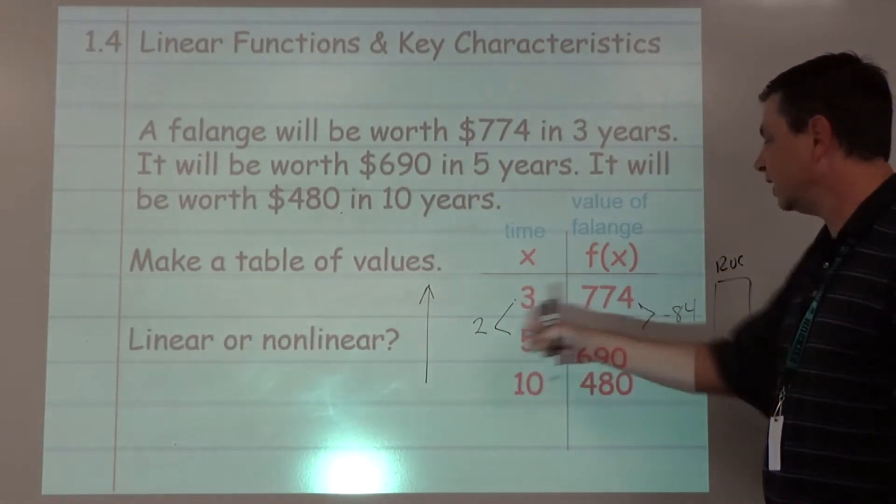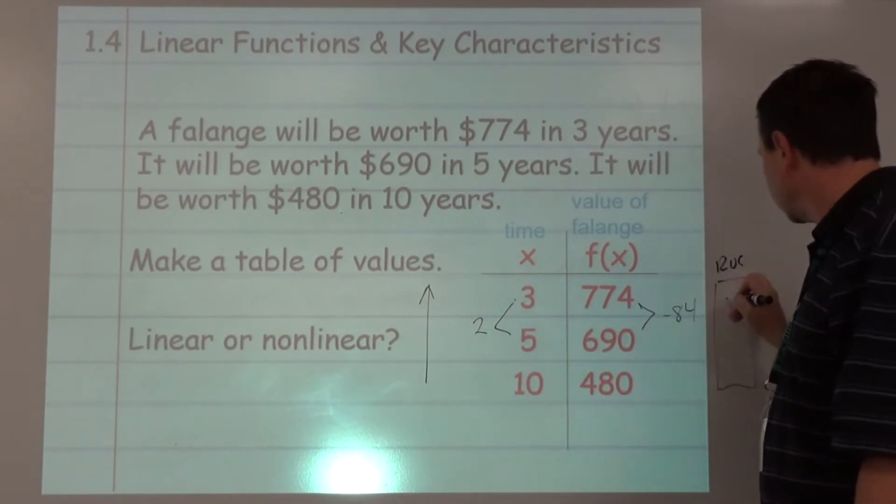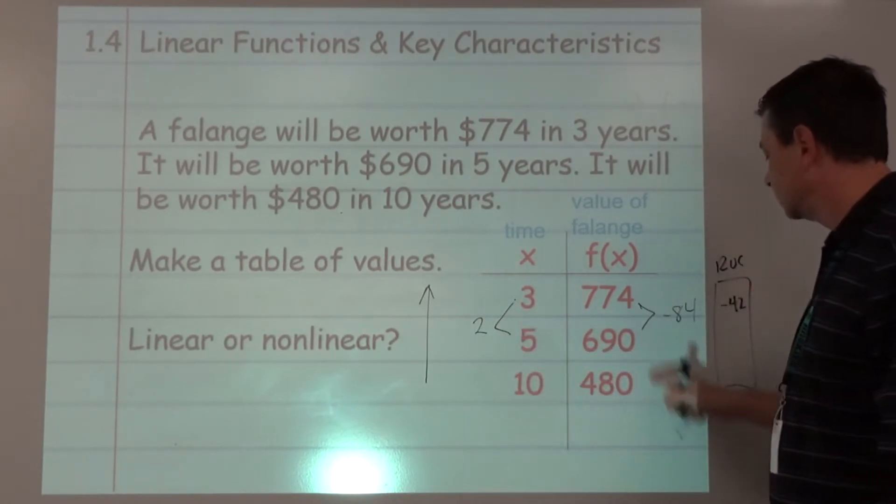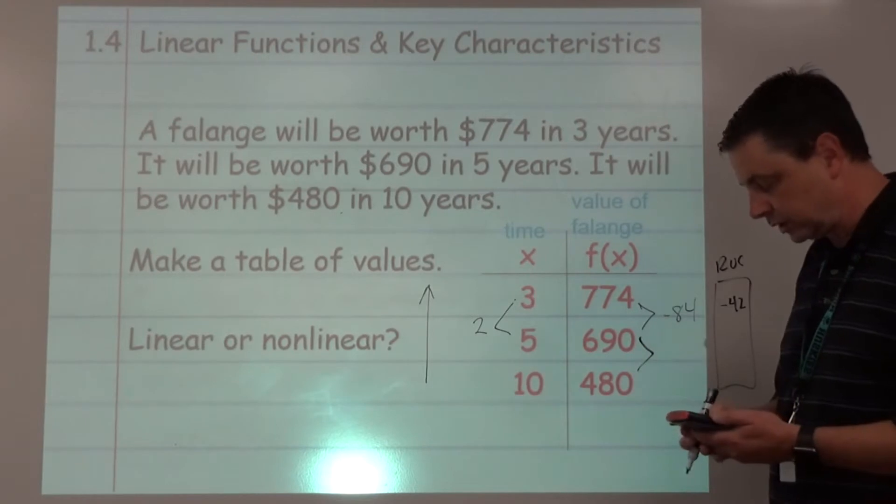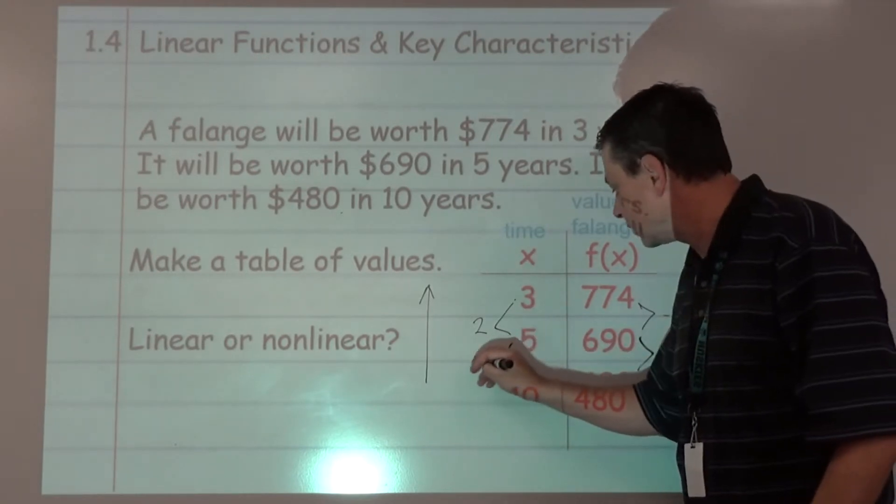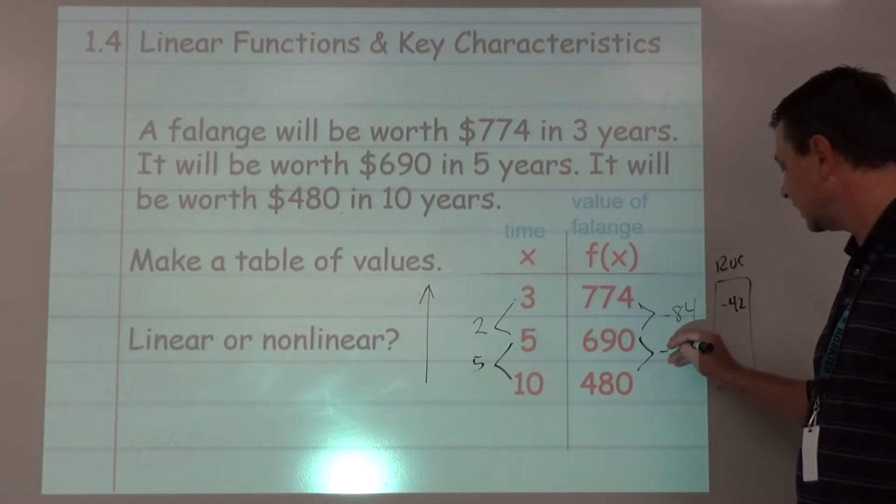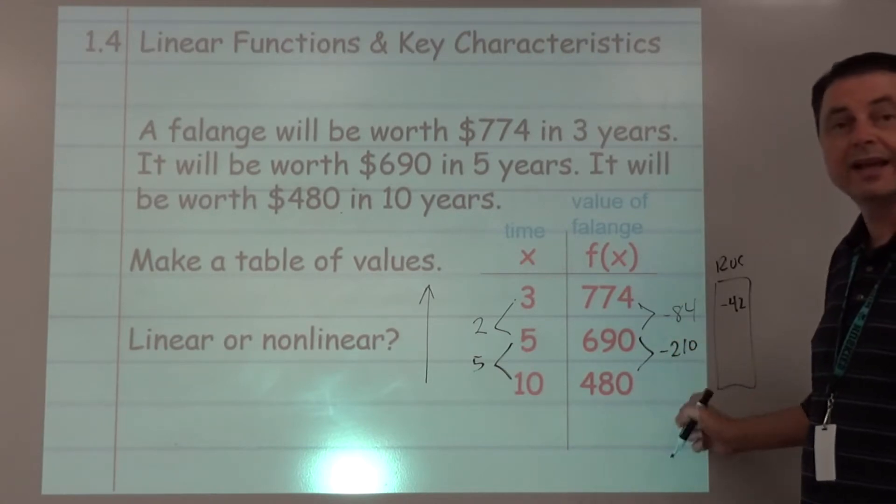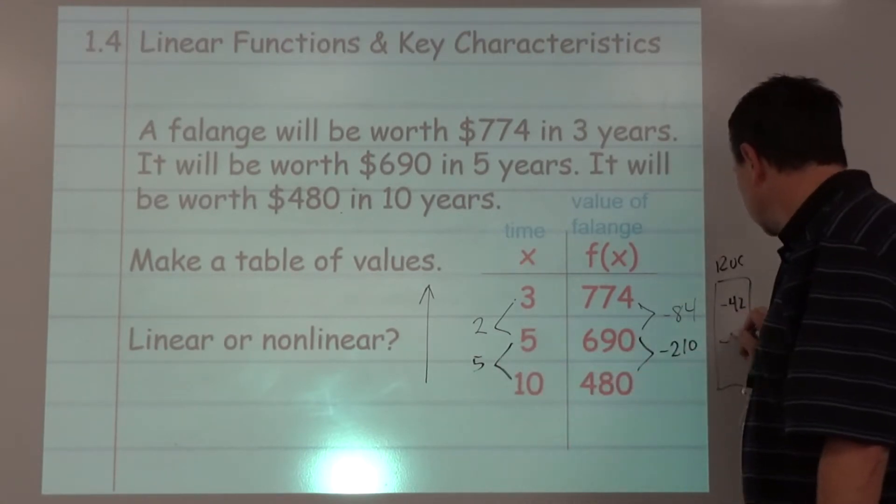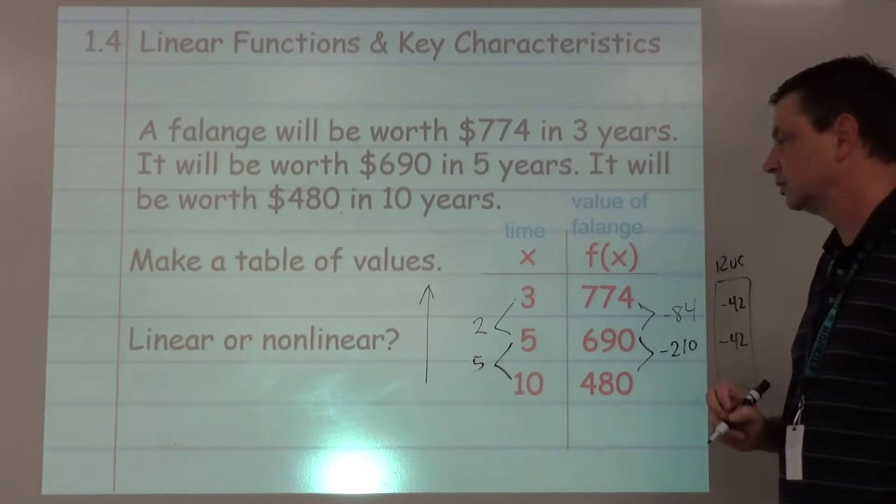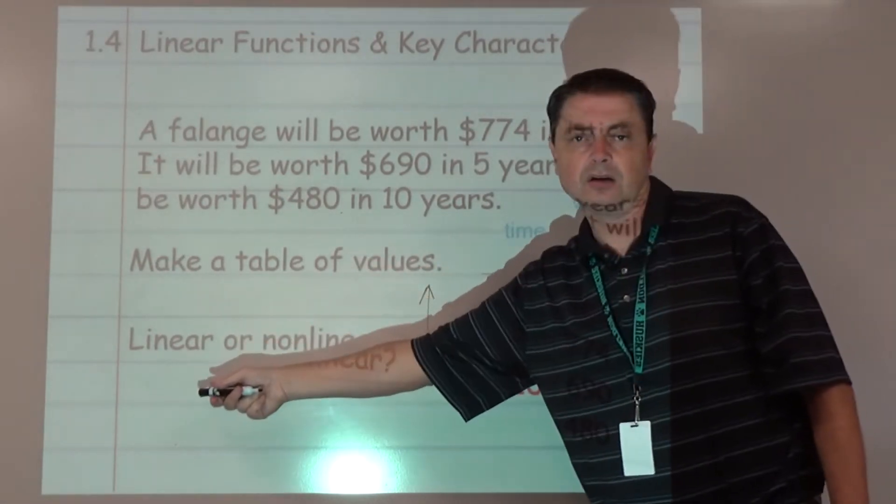Divide negative 84 by 2 and we get negative 42. Let's try this one. We subtract and get 5, subtract and get negative 210, and divide those, another negative 42. So it's linear because the rate of change is constant.